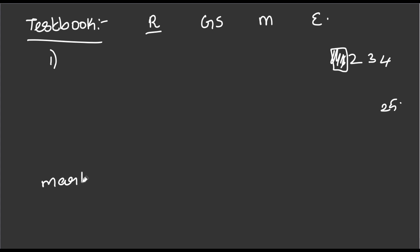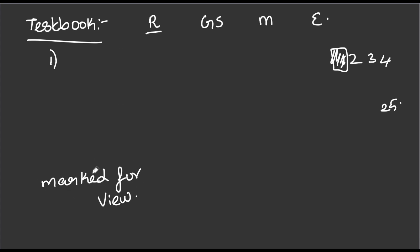Marked for review. If you want to know about the purpose — for beginners — if we answer and mark for review, the color is different. Green is different. If you answer green plus answered, so you can see how to do that in the exam.